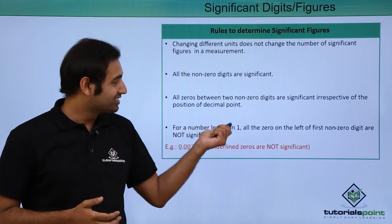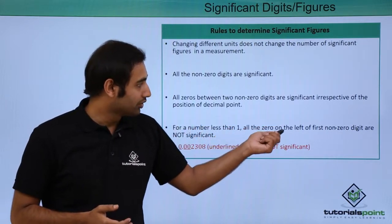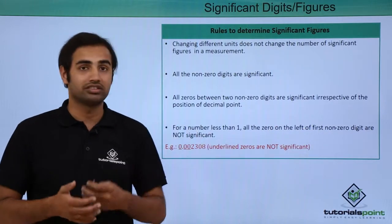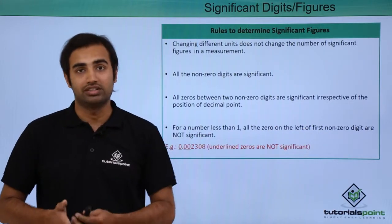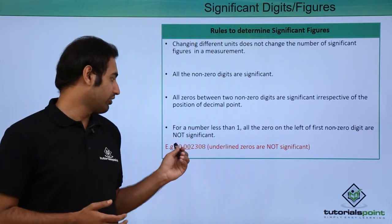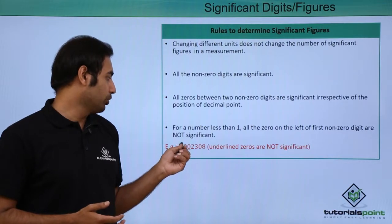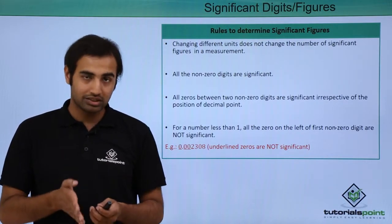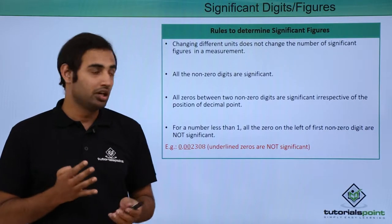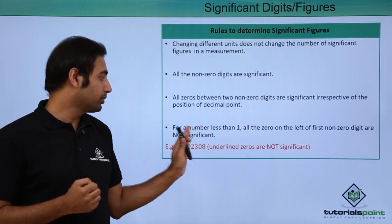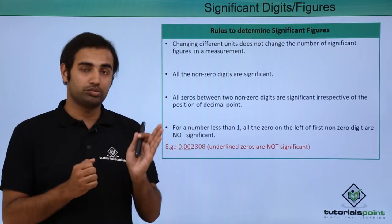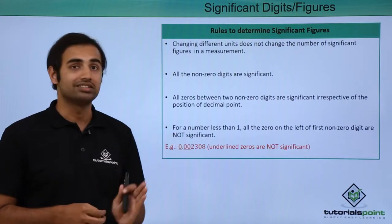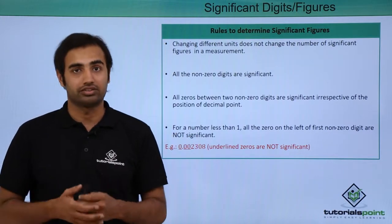For a number less than 1, all the zeros on the left of the first non-zero digit are not significant. So for example if I have a number like 0.002308, this number will have only four significant digits because all the preceding zeros — all the zeros before the first non-zero digit — will be considered insignificant.